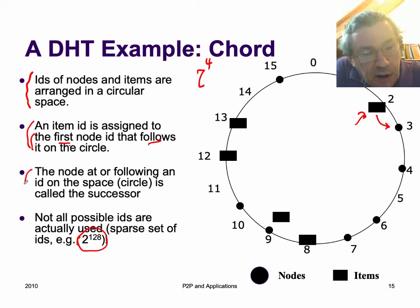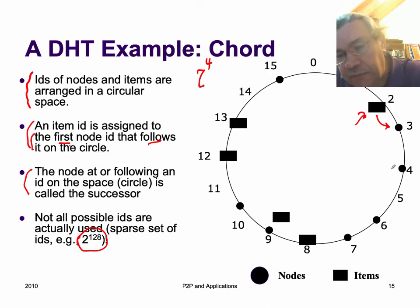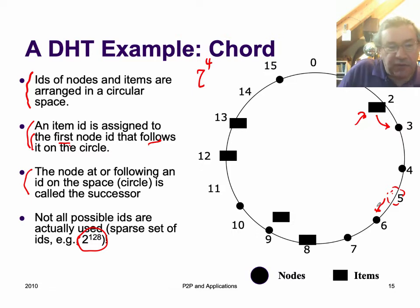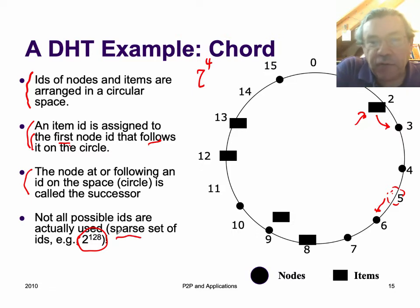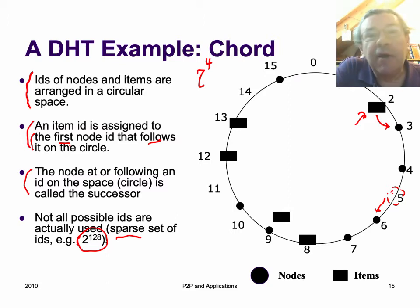The nodes are organized around the circle by their IDs. The node following a particular ID is called the successor. So if we have ID 5 here and there's no node there, the successor is node 6, where there is a node. The storage is sparse — we'll have a very large ID space, for example 128 bits, but the number of nodes and items will be much smaller.